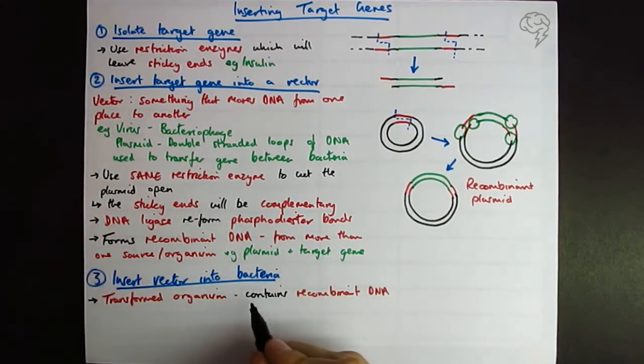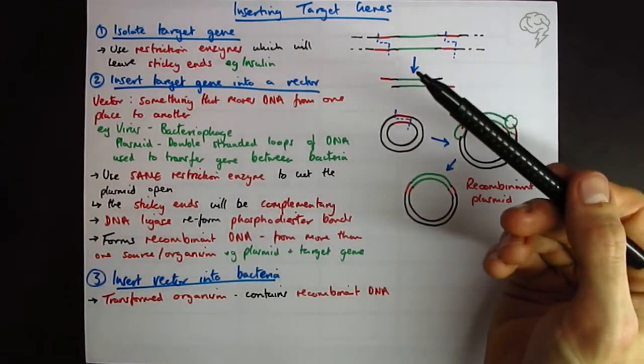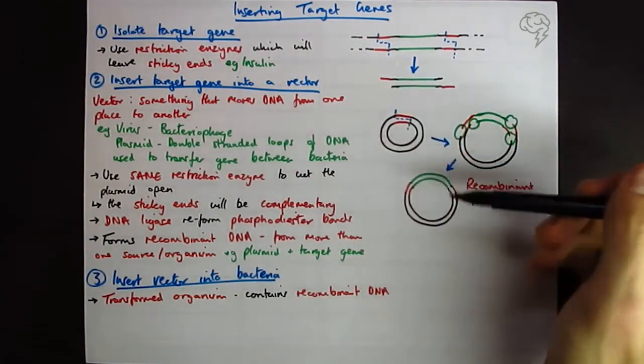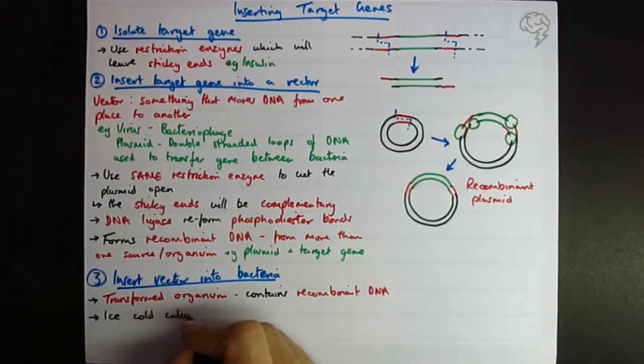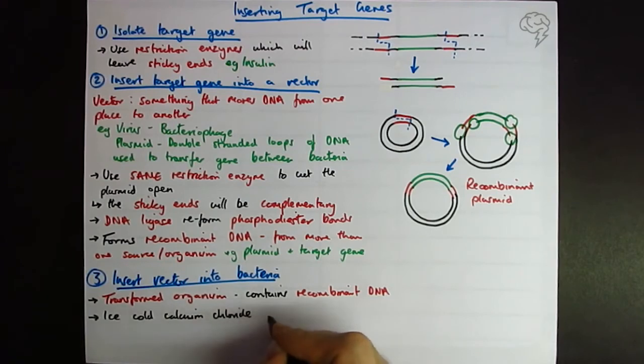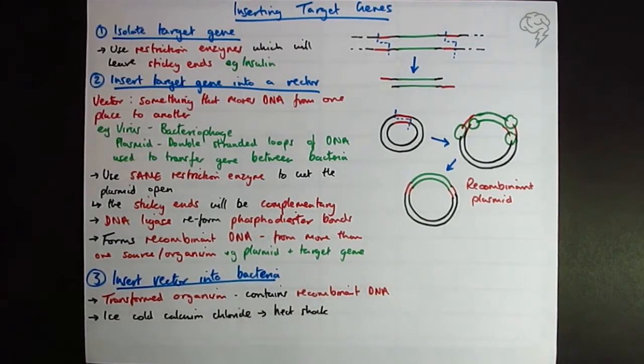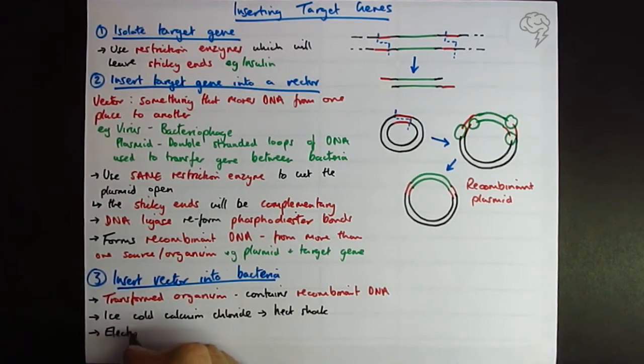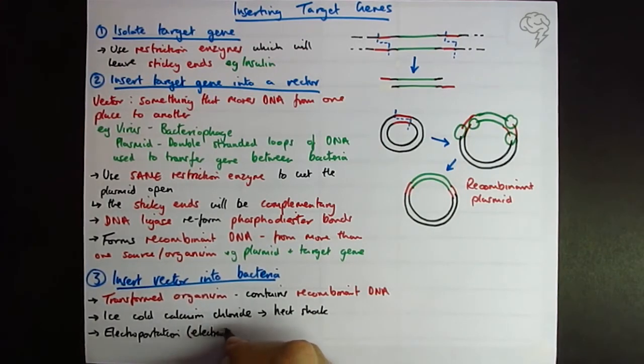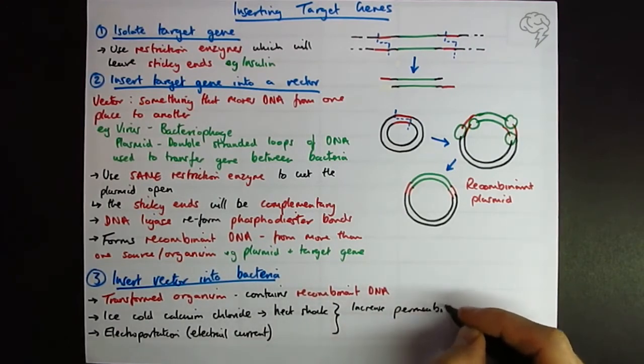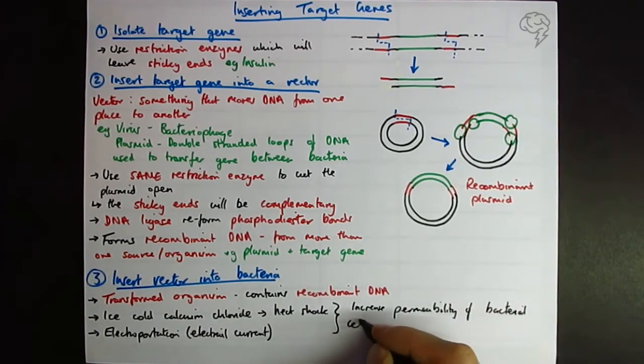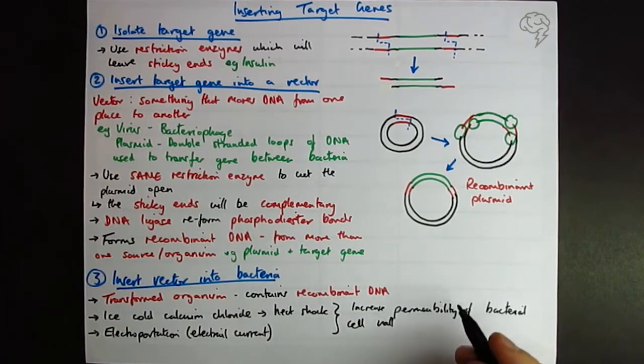So how do we get the plasmid? I mean, if this is a bacteriophage, then it's going to do it automatically. There's no process that has to be really controlled by the scientists in the lab. If you're doing this with using a plasmid, which is what they're always going to ask, you can do this in one of two ways. You can use ice-cold calcium chloride and then heat shock them. Basically, you're stressing out the bacteria and you're making the cell wall more likely, more permeable to the plasmids. Or you can do something called electroporation, which is new to the specification this year. This is basically applying an electrical current. But they both do the same thing. They both increase the permeability of the bacterial cell wall. And that means that it's more likely to take up the recombinant plasmid.